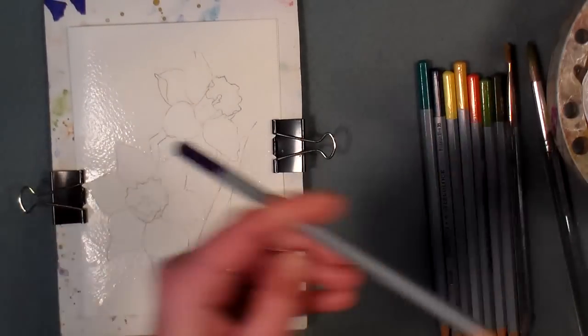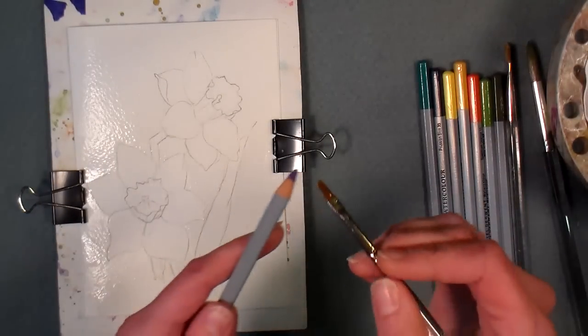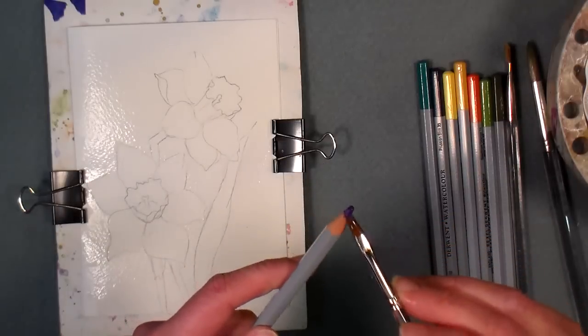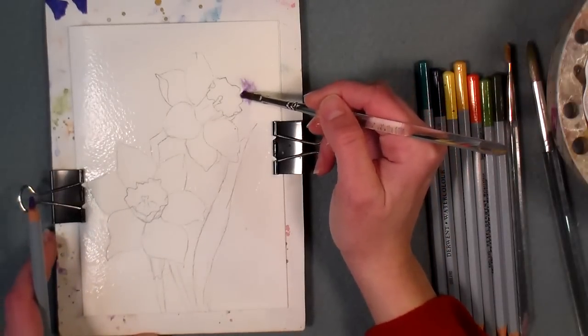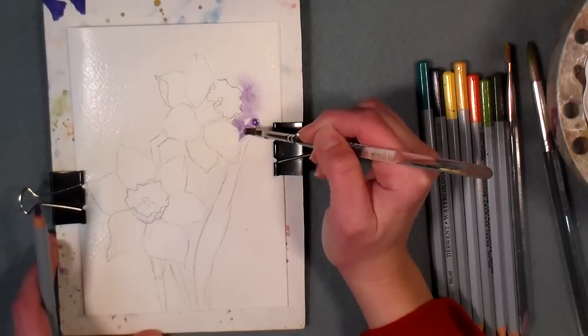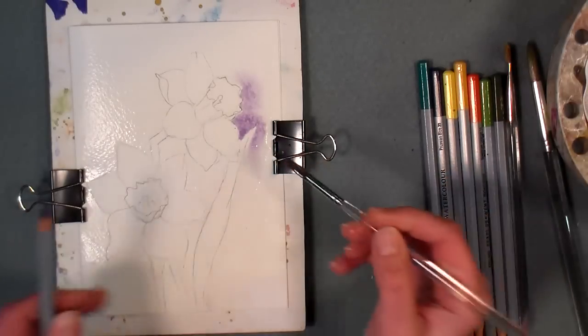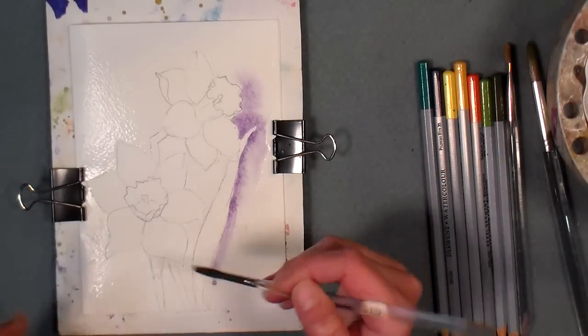Alright then what I'm gonna do is grab one of my pencils that I want to use in the background. Since my flowers are gonna be yellow, I'm gonna use the complementary color which is purple, so I'm gonna use purples and blues in the background. I'm just using my pencil as a palette, so this is gonna be a really good technique for those of you that have a set of watercolor pencils and maybe don't have paint, but you want to have more of a painterly look.